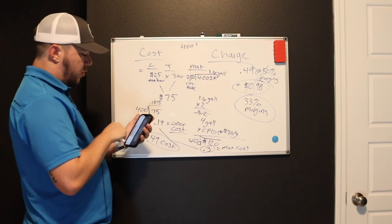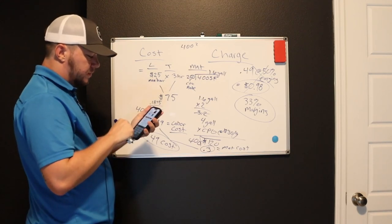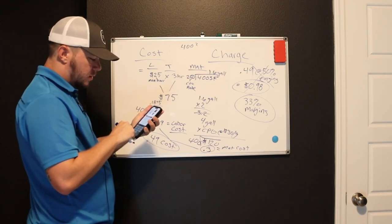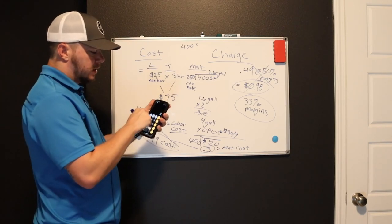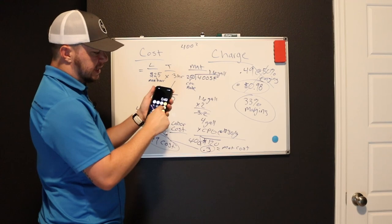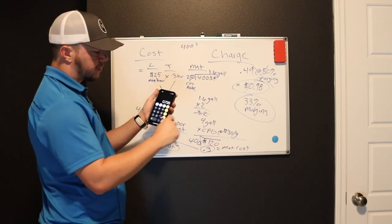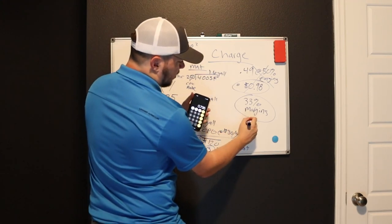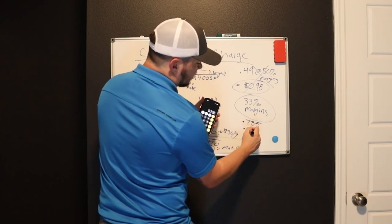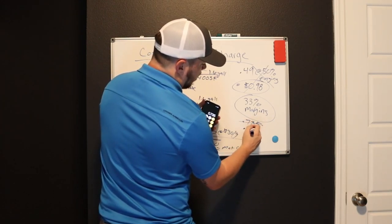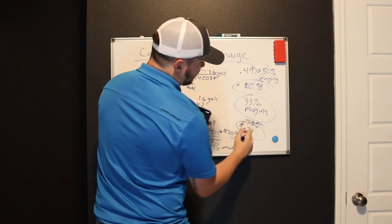In other words, if it costs you point 49 cents to paint this room, you're going to want to take that 49 cents. So you're going to do 0.49 times it by 1.5. That's 0.735. You can round up if you want to, to 0.74. That's what you need to be charging.